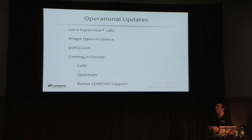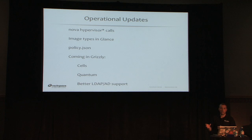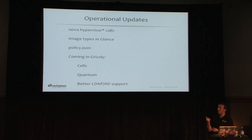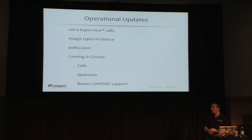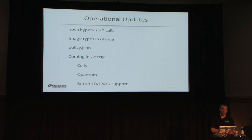For operational updates from Folsom: there are new Nova API calls added, like hypervisor-list and hypervisor-stats, so you can get utilization statistics from your hypervisor. Glance has new image format types. Highly recommend investigating policy.json if you want to limit API calls based on role. Coming in Grizzly: the cells concept, Quantum for networking (which was in Folsom but I think is production-ready in Grizzly), and better LDAP and Active Directory support.